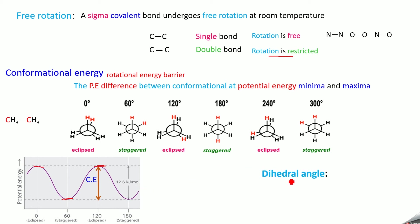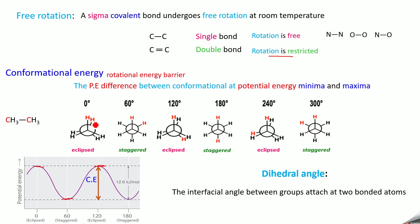The next important term is dihedral angle. It is defined as the interfacial angle between the groups attached to two bonded atoms. For example, one hydrogen is attached to the front carbon and another hydrogen is attached to the back carbon — the angle between these two is the dihedral angle. In the eclipsed form it is 0 degrees; in the staggered form it is 60 degrees; at the next eclipsed it is 120 degrees; and at 180 degrees we get another staggered form. So, 0°, 120°, and 240° give eclipsed forms and 60°, 180°, and 300° give staggered forms.